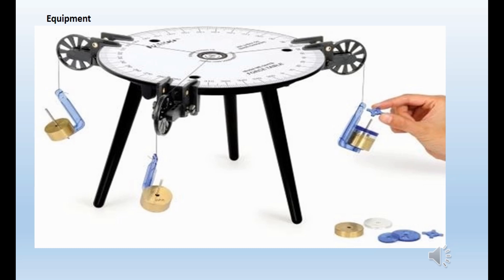Equipment. Force table experimental setup. The force table comes with the center post and three data cable legs, three super poly clamps, three mass hangers, a plastic ring, and a spool of thread.